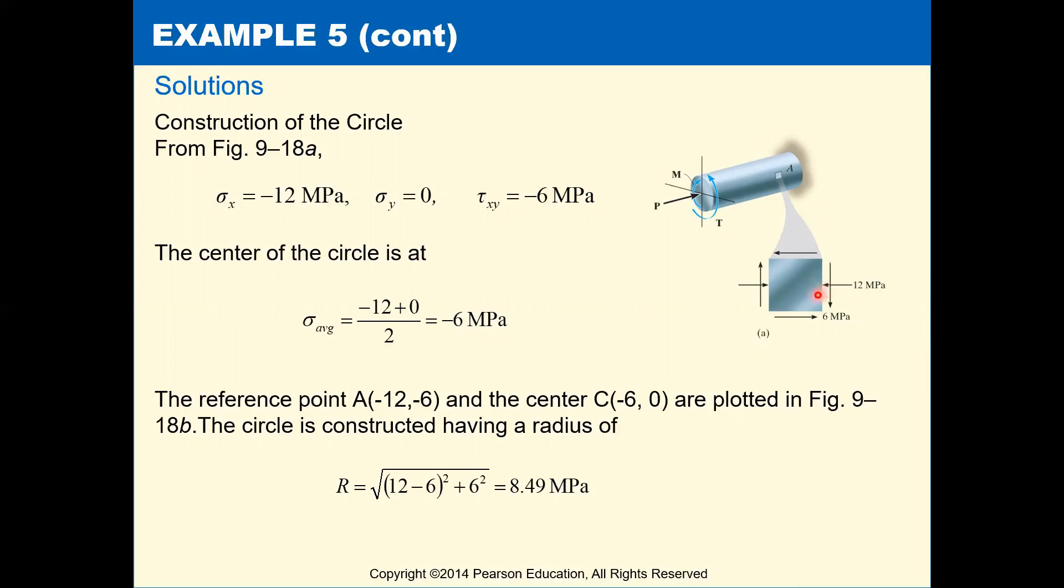So in order to draw the Mohr's circle, remember we need to know the center of the circle and a point on the circle. Our center is going to be located at sigma average, so that's negative 12 plus 0 over 2 gives us negative 6 megapascals.